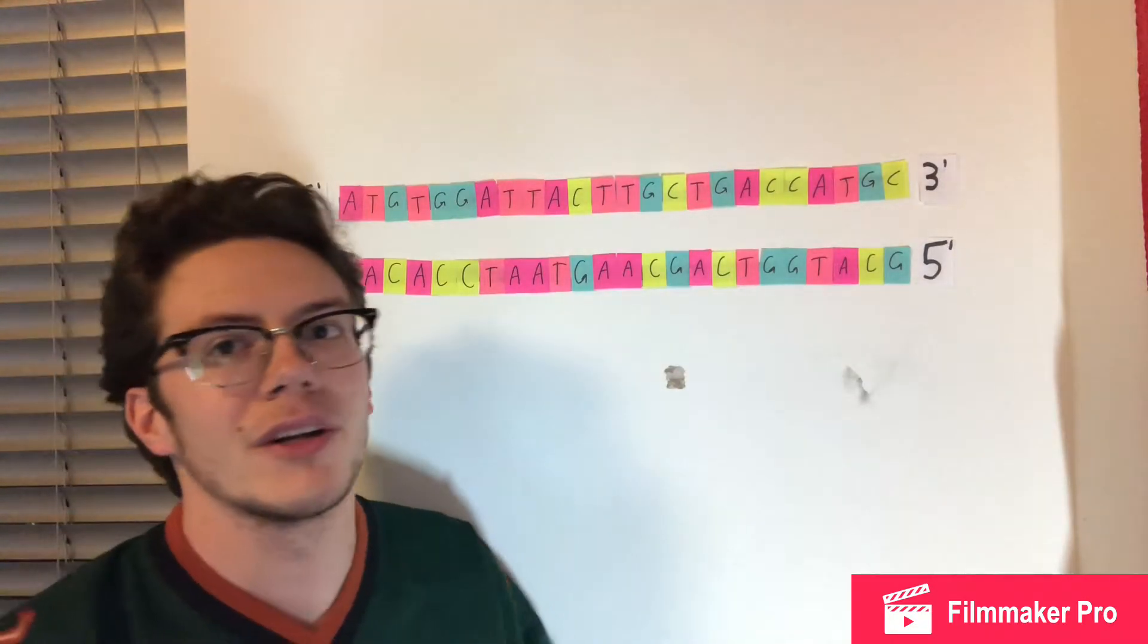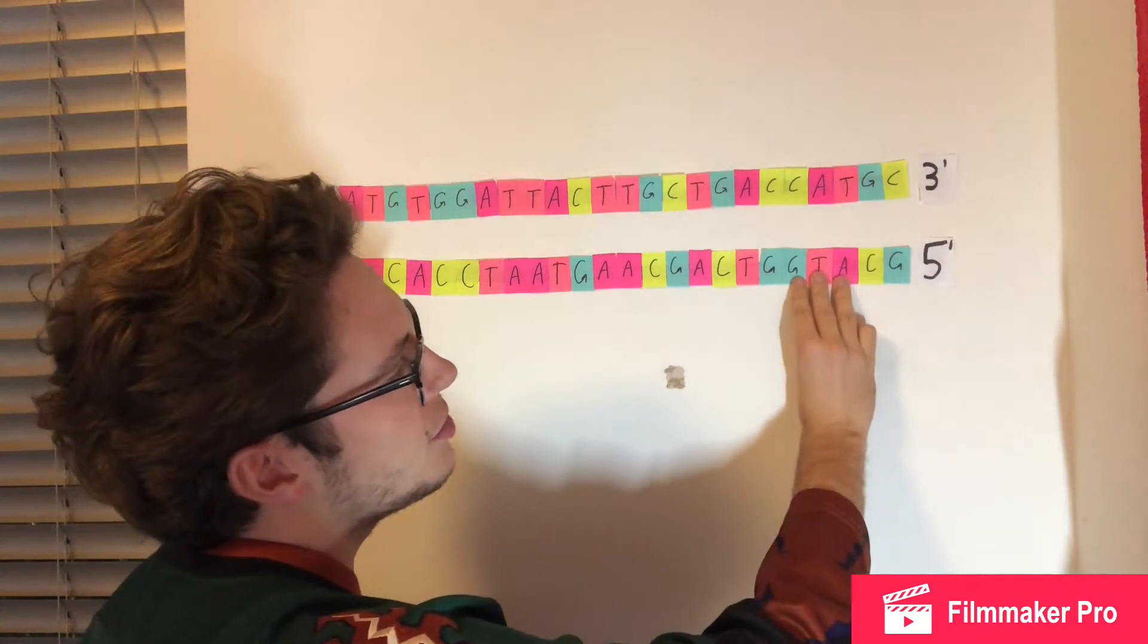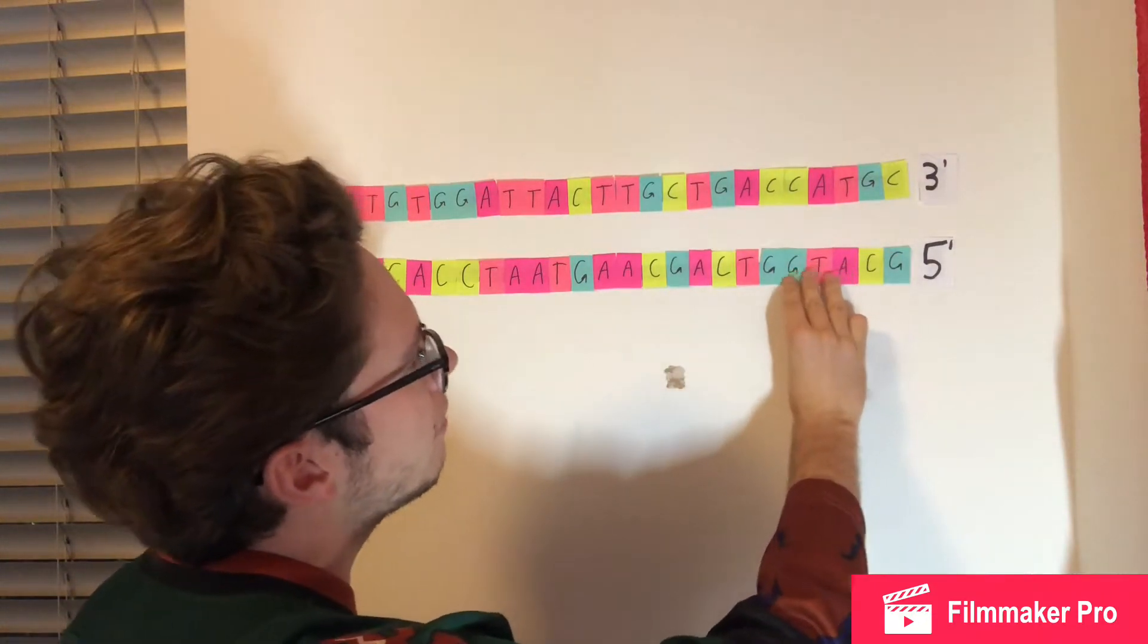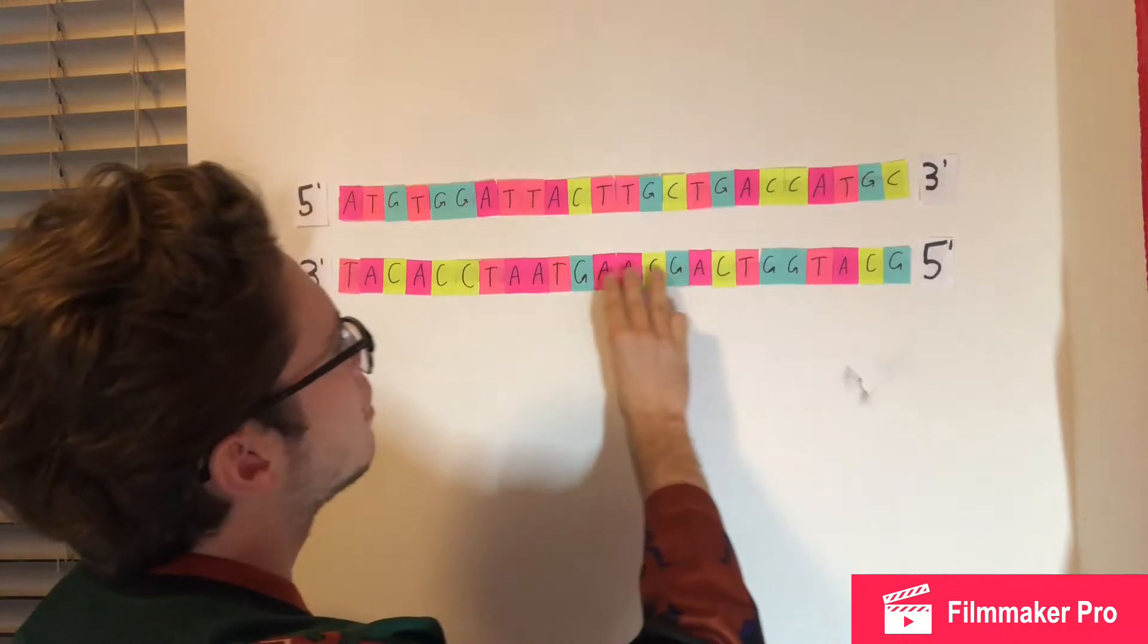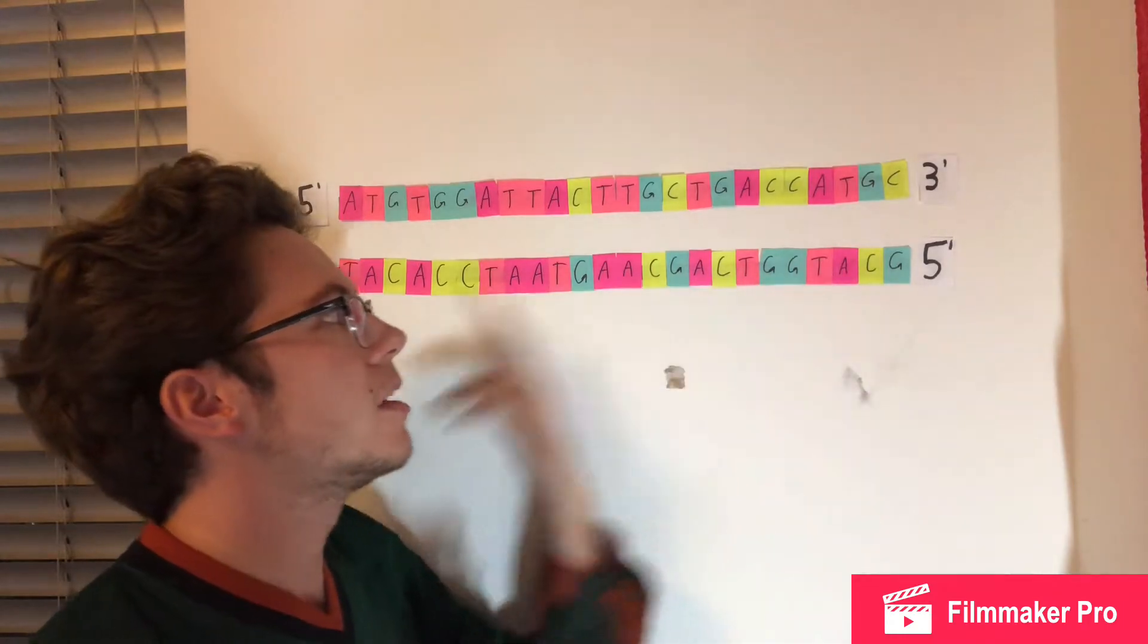So we're going to start down here at the five prime to the three prime direction. So we got AUG right here at the start codon, so we're going to do one, two, three, four, and then we get to the fifth one which is a stop codon UAA. So four amino acids - that's what we're looking for.